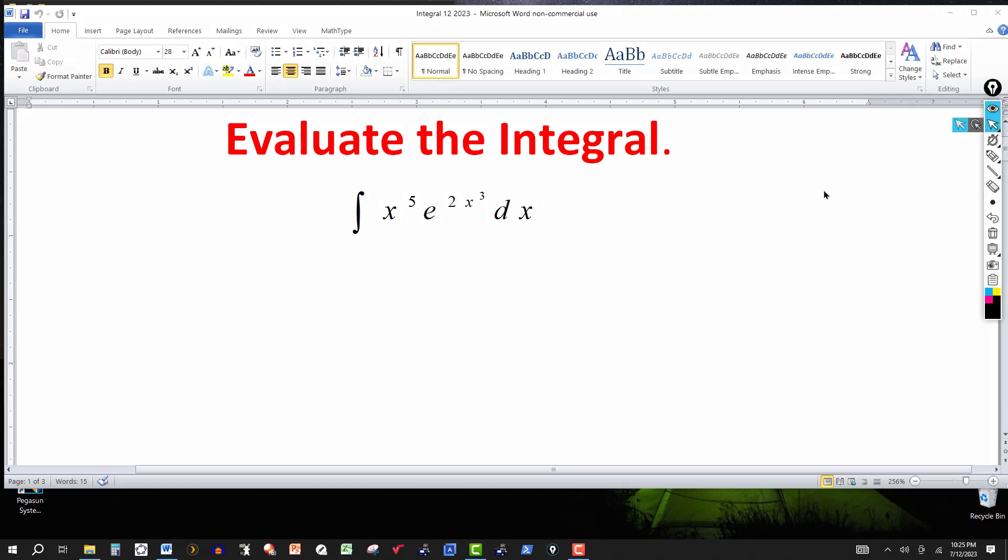Now, in this particular problem, I've seen some do it using several substitutions, reducing the power on the x there, and then eventually doing integration by parts. It's a bit lengthy. I'm just going to use the standard method of integration by parts to start off with. The basic formula here: integral of u dv equals the product of u and v minus the integral of v du.